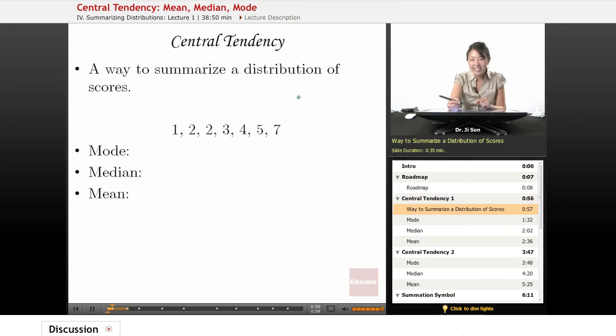So central tendency. Basically, the idea is we want to be able to summarize a distribution. We've learned about some different ways you could summarize it, like the shape, for example. You could say it's a uniform shape. The shape is just one dimension that you could summarize a distribution on. Central tendency is another dimension that you could describe it on. So central tendency, you could think of as the middleness. How do you say what's the middle of a distribution? Well, there's a couple of ways.